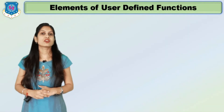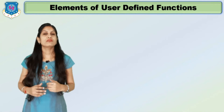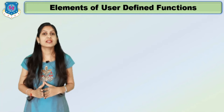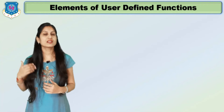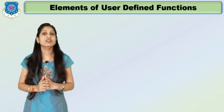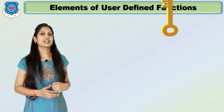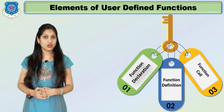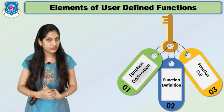Now we move to the elements of a user-defined function and why we require them. In our previous practical sessions, we were writing all logic inside the void main function. But when a user creates their own function, we need three different elements: the first is a function declaration, the second is a function definition, and the third is a function call. Using these three elements, we can create user-defined functions.